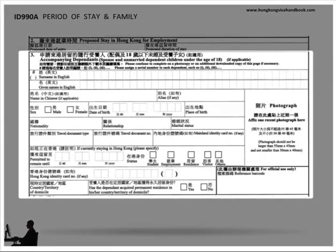If some or all of your family members are accompanying you during your stay for employment in Hong Kong, you complete this section of the form to have them joined as a party to your application. They will be granted dependent visas, assuming that they qualify as your legal dependents, and the period of stay they receive will mirror yours as the principal applicant exactly.